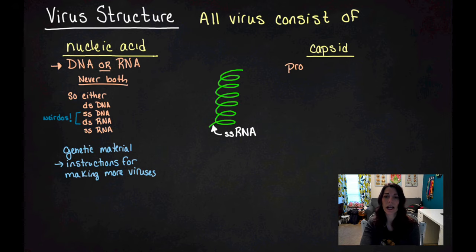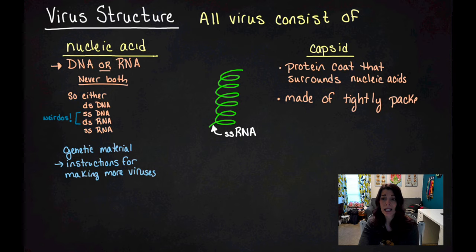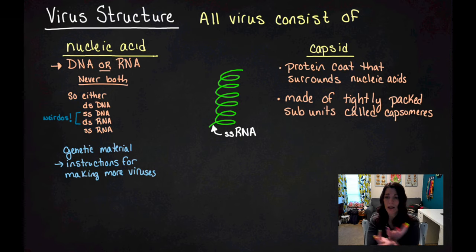A capsid, on the other hand, is a protein coat that surrounds and protects the nucleic acids. And it's made of tightly packed subunits. Think of it like you're building the capsid out of Legos, and those subunits are all called capsomeres.